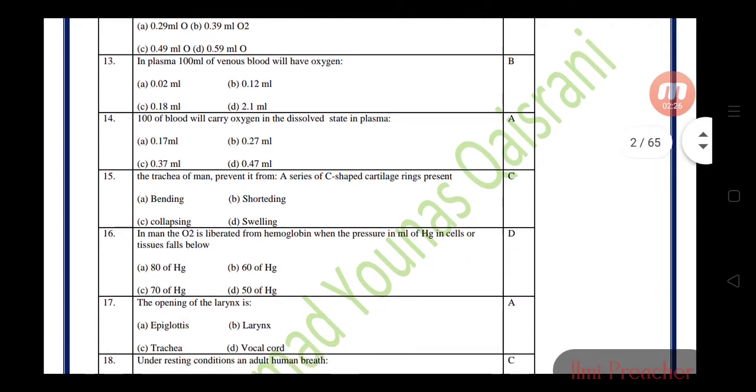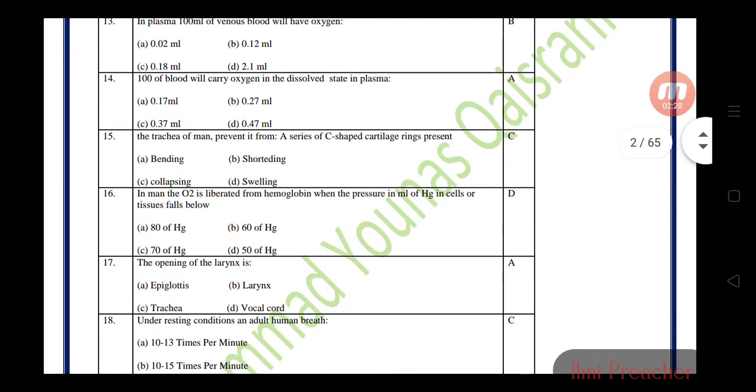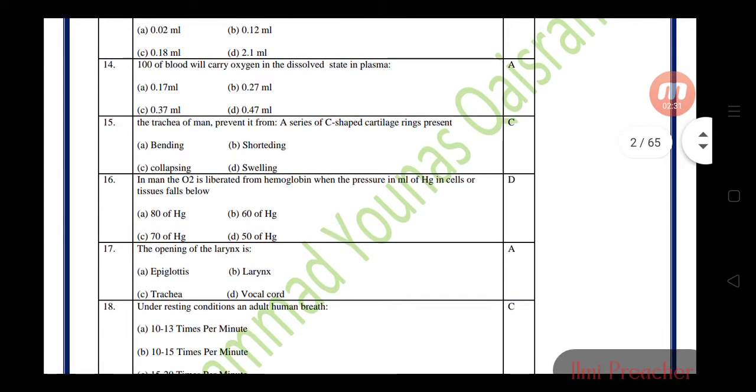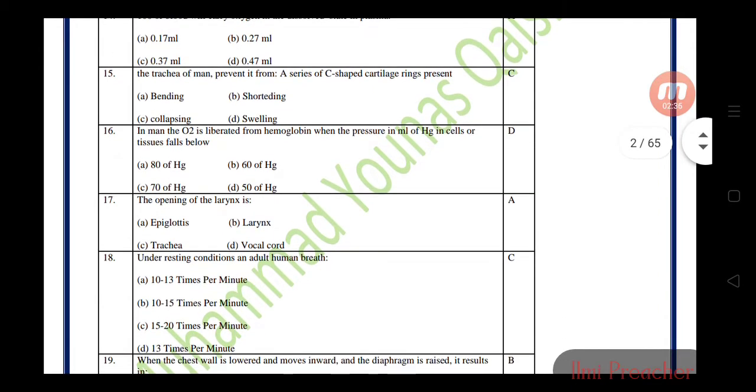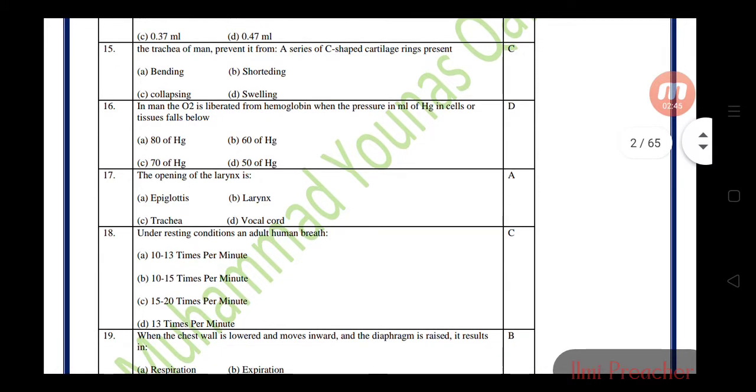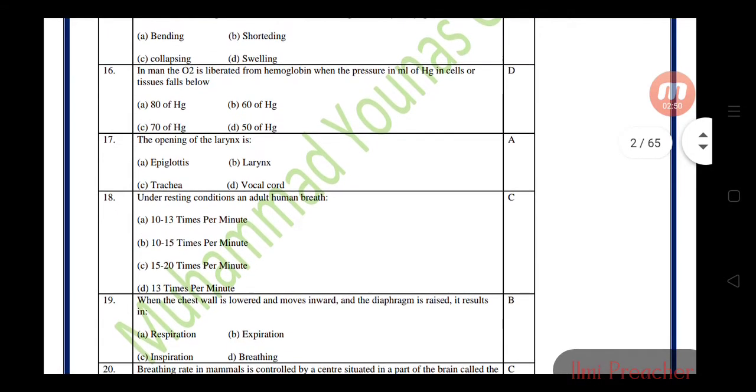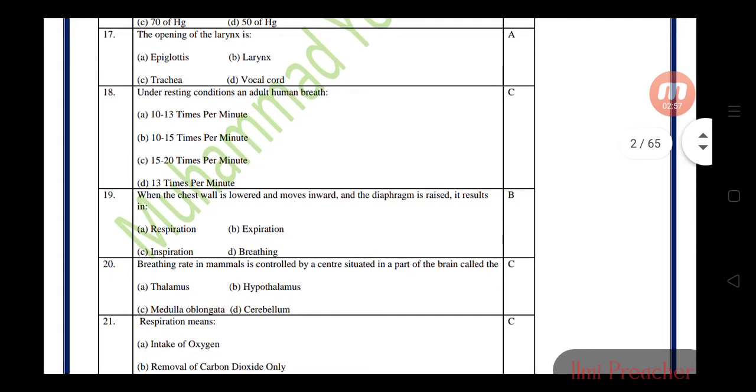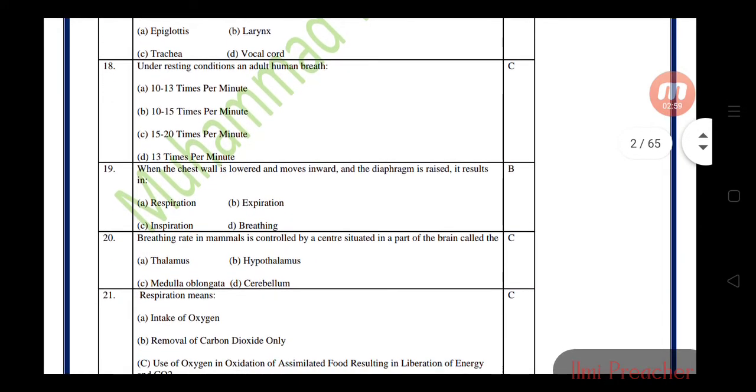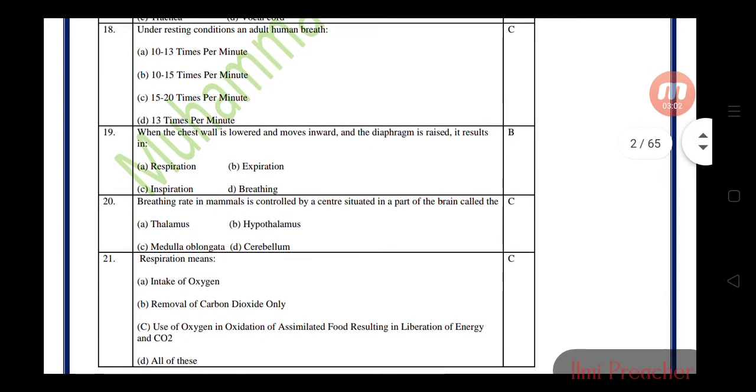Next MCQ: 100 grams of blood will carry 0.77 milliliter oxygen dissolved in plasma. The trachea of man is prevented from collapsing by a series of C-shaped cartilage rings. In man, the O2 is liberated from hemoglobin when the pressure in tissues falls to 50 mmHg. The opening of larynx is the epiglottis. Under resting condition, an adult human breathes 15 to 20 times per minute.